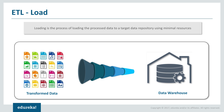The last step is loading — the process of loading processed data into a target repository using minimal resources. Transformed data can be written to a file or a DB, and for reporting purposes it usually goes to a data warehouse. You can do a bulk load for efficiency, or row-by-row for smaller datasets — depending on business rules. In summary: extract without affecting the source, transform based on business rules, then load data into your target — that completes the ETL process.